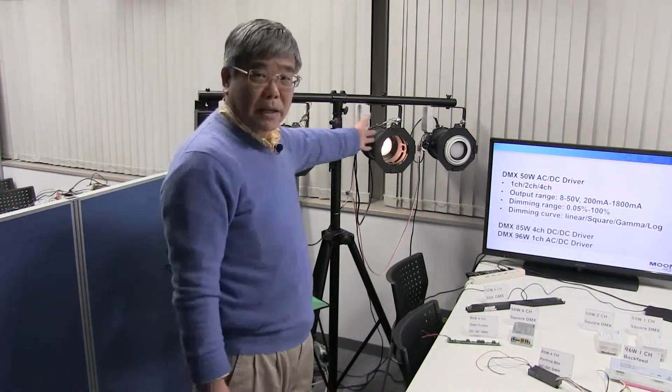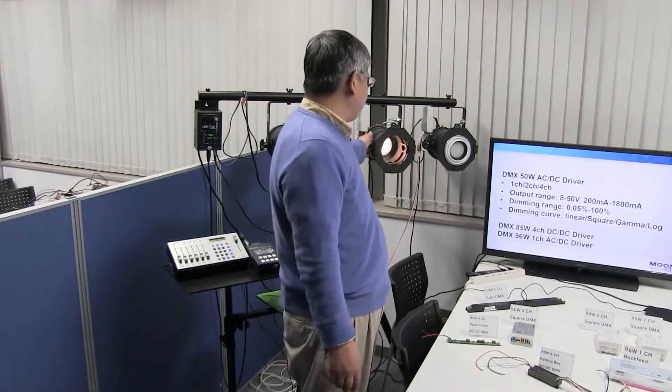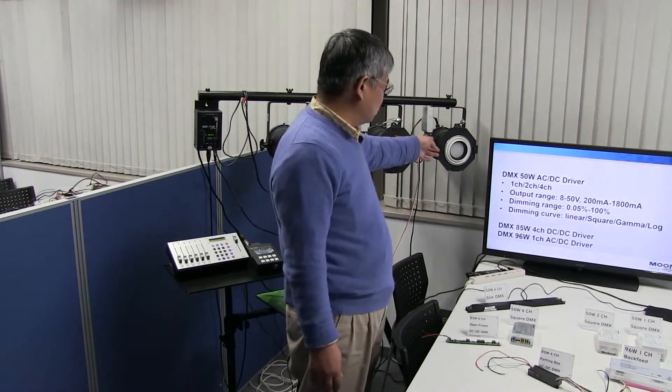Nearby that, 2 lights here are driven by the DMX power supply of moons. The one is driven by a single output power supply. And the other is driven by a 4 channels output power supply. This lamp is a 4 channels lamp of RGBW.